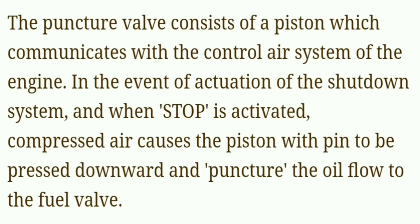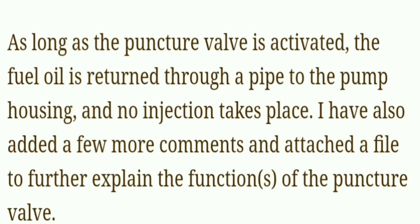The puncture valve consists of a piston which communicates with the control air system of the engine. In the event of actuation of the shutdown system, when the stop is activated, compressed air causes the piston with pin to be pressed downward and punctures the oil flow to the fuel valve. As long as the puncture valve is activated, the fuel oil is returned through a pipe to the pump housing and no injection takes place.